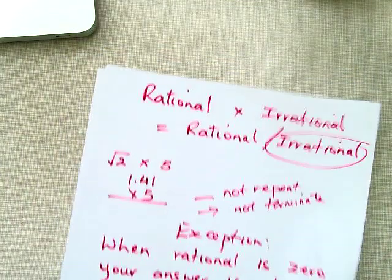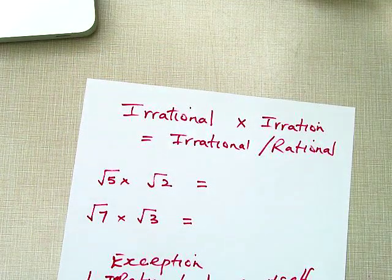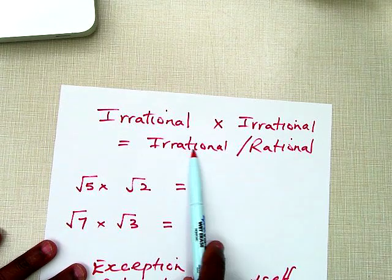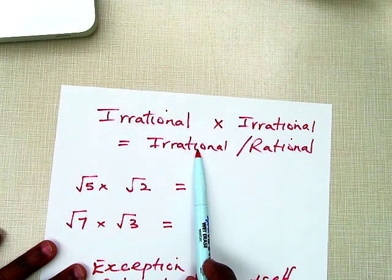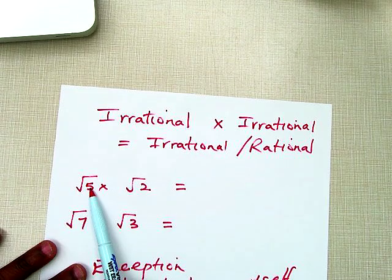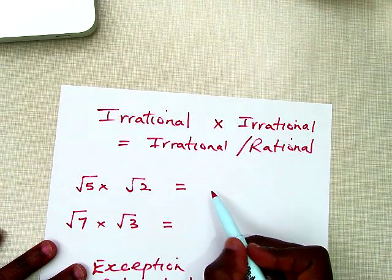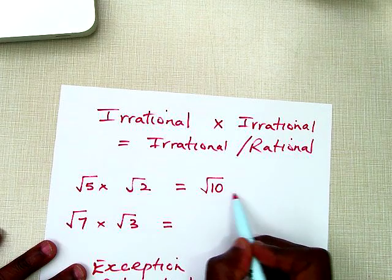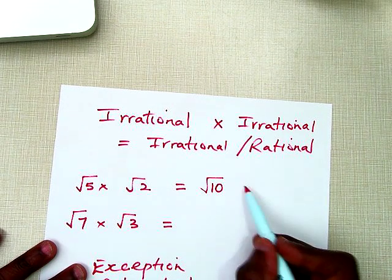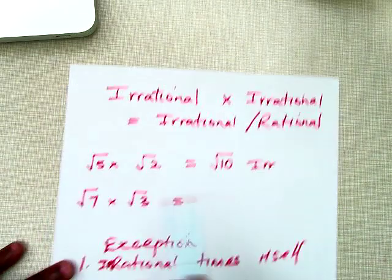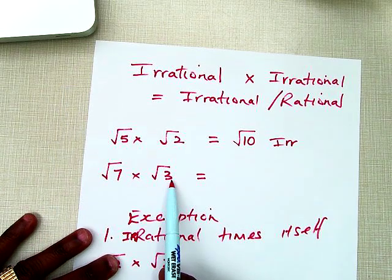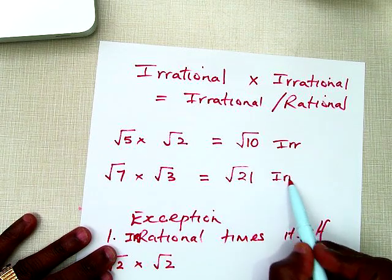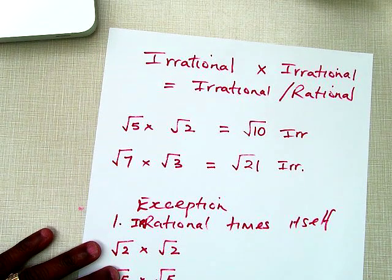The last combination is irrational times irrational. Most times you will get an irrational number. For example, square root of 5 times square root of 2 gives you square root of 10, which is still irrational. Square root of 7 times square root of 3 gives us square root of 21, which is not a perfect square and is still an irrational number.